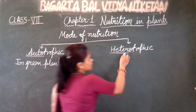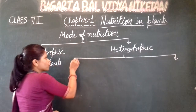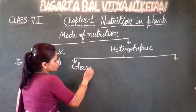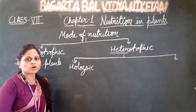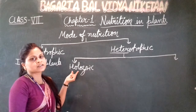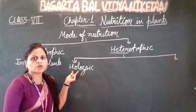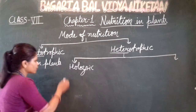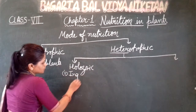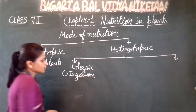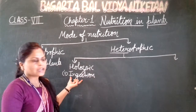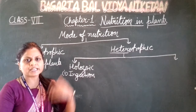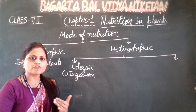Heterotrophic mode of nutrition is again divided into 4 types. First is holozoic. Holozoic mode of nutrition is seen in human beings also. In this type, there are 5 steps. First is ingestion — in this step, an animal takes in food. इस process में एक animal food लेता है, खाना खाता है, and that food reaches the stomach.